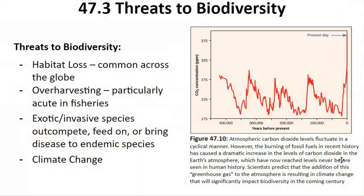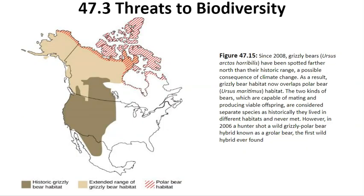Figure 47.10 shows the cyclical fluctuations of atmospheric carbon dioxide over the past 400,000 years. The burning of fossil fuels in recent history has caused a dramatic increase in CO2 levels in the Earth's atmosphere, reaching levels never seen in human history. One effect of increased CO2 and global temperatures is shown in Figure 47.15: since 2008, grizzly bears have been spotted further north than their historical range, so grizzly bear habitat now overlaps with polar bear habitat. It turns out the two bear species are capable of mating and producing viable offspring, resulting in grizzly-polar bear hybrids known as growler bears.